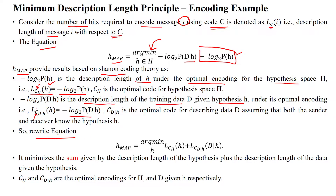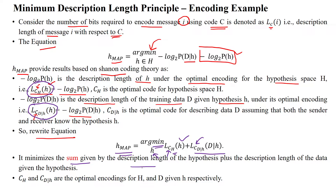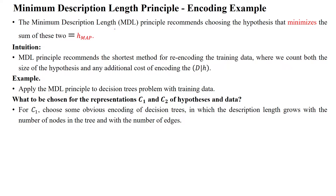We can rewrite the equation using two terminologies. The MAP hypothesis minimizes the sum of: the description length of hypothesis h under code C in hypothesis space H, denoted LC_H(h), plus the description length of data given h under code C, denoted LC(D | h). The MDL principle recommends choosing the hypothesis that minimizes the sum of these two terms.